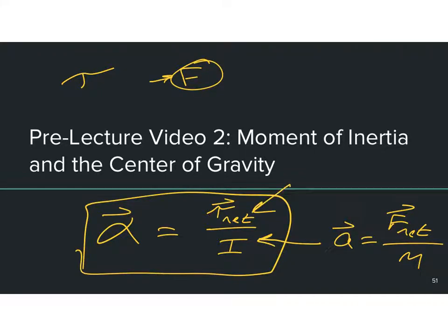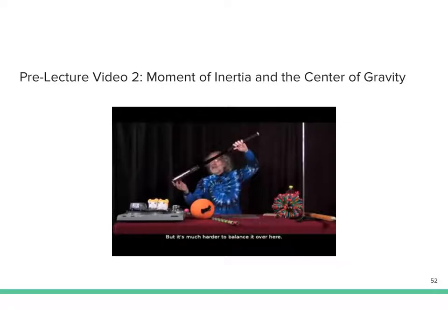We've already broken down torque. Now we've got to break down the moment of inertia a little more. This is a pre-lecture video — it talks about holding a baseball bat and balancing it. The key concept is that how mass is distributed matters; it changes how something accelerates angularly or rotationally. There's also a demo showing spinning with mass out versus in, illustrating how mass distribution affects acceleration.